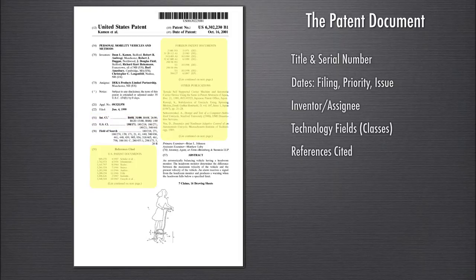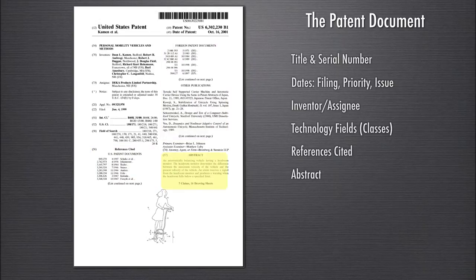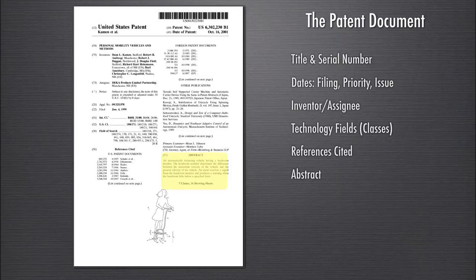References cited are useful for searching and for fully understanding the patent — you get to see what was cited during the patent examination stage. There's also an abstract, which is intended to be a brief description of what the invention actually is. Most patent applicants write abstracts in a rather broad manner so as to attract more attention and maybe get people to think their patent covers more than it actually does. Abstracts are not the measure of the invention.